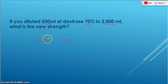And we're starting off with 500 mils of that. And we want to know how much strength are we going to have of 2,000 mils of solution. So 2,000 times N.